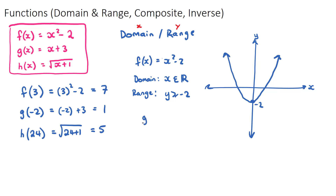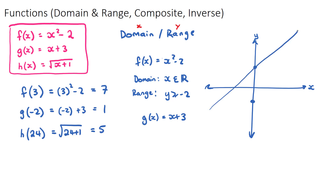For g(x) = x + 3, this is a straight line with y-intercept at 3. A linear function goes left and right forever and up and down forever, so the domain is x ∈ ℝ and the range is y ∈ ℝ.